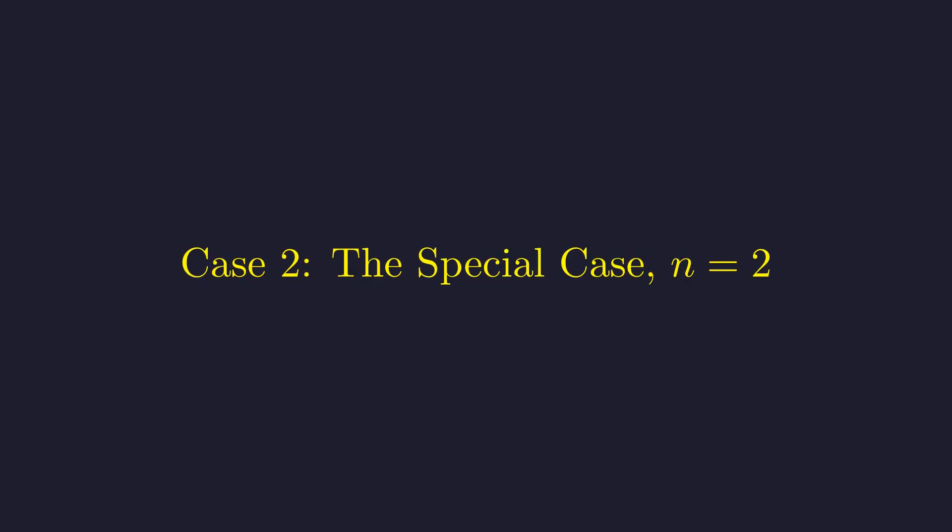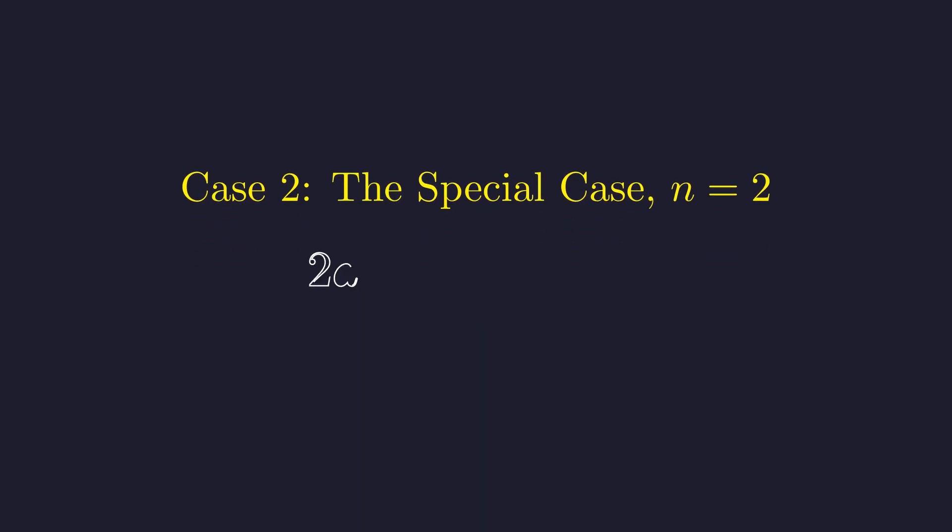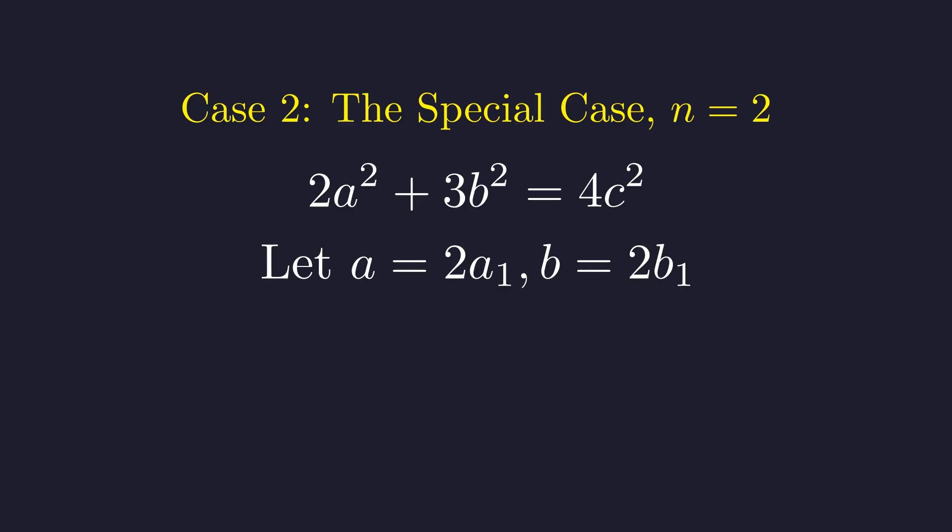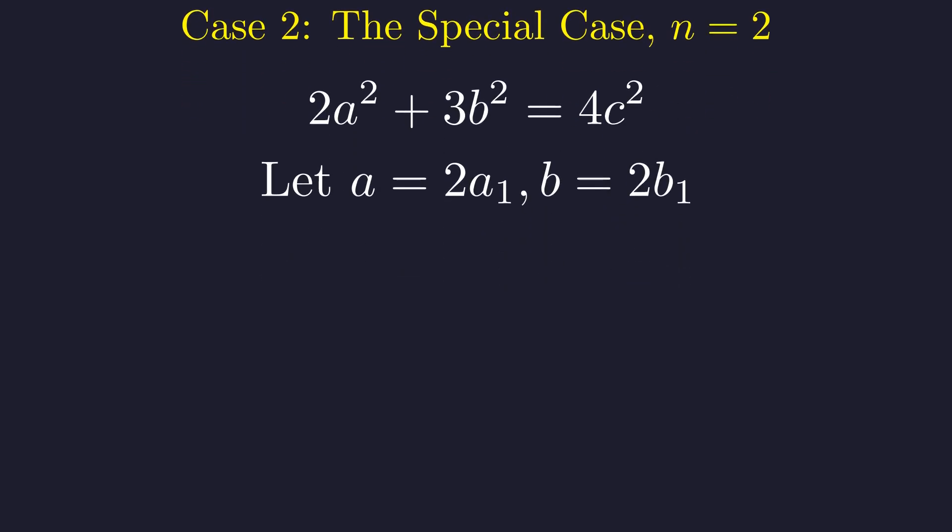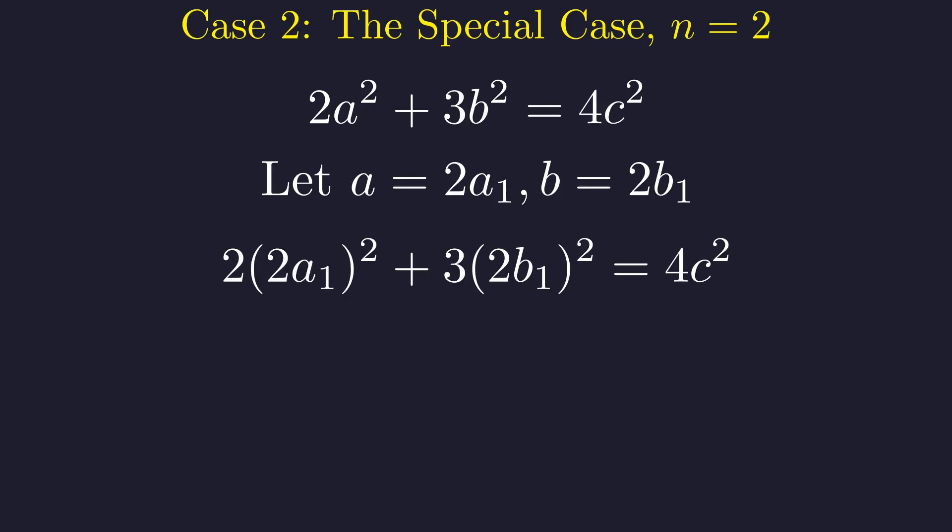We know from our modular four analysis that a and b must both be even. Let's see what happens when n equals two. For n equals two, our equation becomes this. We know a and b must be even. Since both are even, let's write a is two times a₁ and b is two times b₁. Substituting these into our equation gives us this form. First, let's apply the exponents to get the squares. Two times a₁ quantity squared is two times four times a₁ squared. Performing the multiplication gives us eight times a₁ squared plus twelve times b₁ squared.